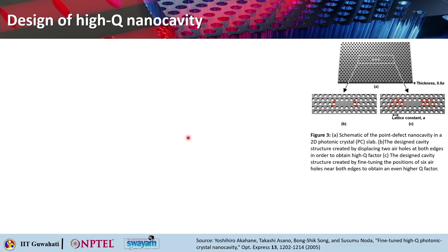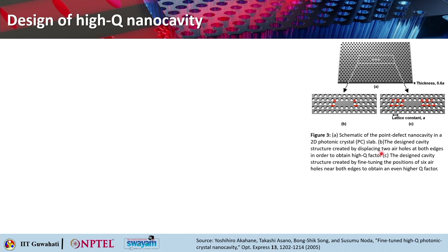An ultra-small cavity enables large-scale integration along with single-mode operation over a broad range of wavelengths. However, high-Q cavities with dimensions on the order of optical wavelengths are difficult to realize since radiation losses are basically inversely proportional to the cavity size. The schematic shows a point defect nano cavity in a 2D photonic crystal slab.